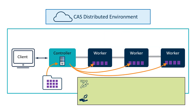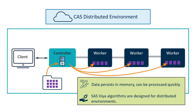Two major advantages of the CAS environment are speed and efficiency. Data can be processed quickly because it persists in memory, so no time is wasted repeatedly reading and writing data to disk. The flexibility of the environment means that you can use even extremely large datasets to generate complicated analytical models, as long as enough worker nodes are added to CAS. The data processing algorithms in SAS Viya are designed so that analytical processing is distributed efficiently among the worker nodes for parallel processing.